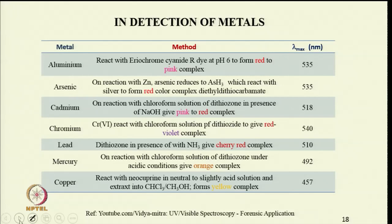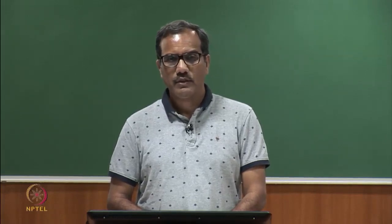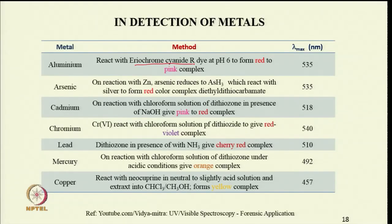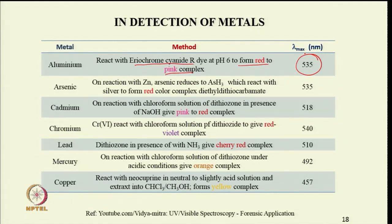UV visible spectroscopy can also be used for the detection of metals. We do not take a spectrum of the metal directly; instead, we convert the metal into a complex that absorbs in the UV visible region. For example, aluminium can be identified by reacting it with eriochrome cyanide R dye at pH 6. It will form a pink complex with lambda max at 535 nm. Eriochrome cyanide R dye is red, and when it forms a complex with aluminium, it gives a pink complex absorbing at 535 nm.